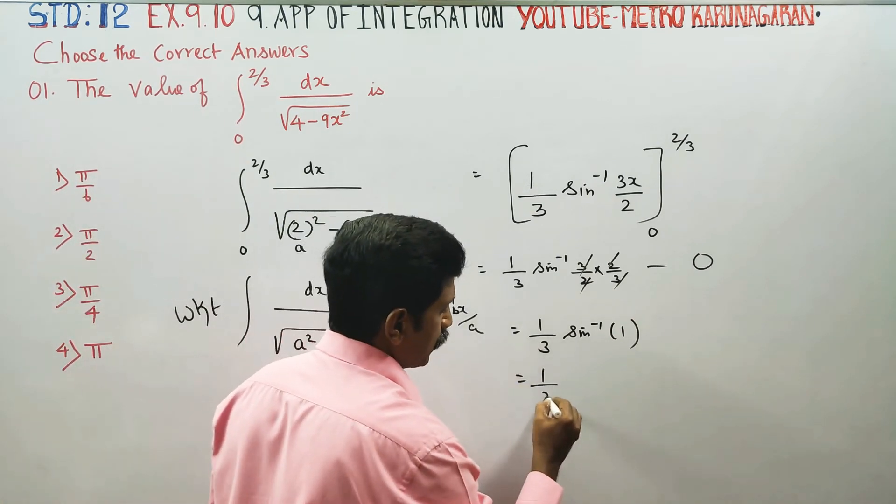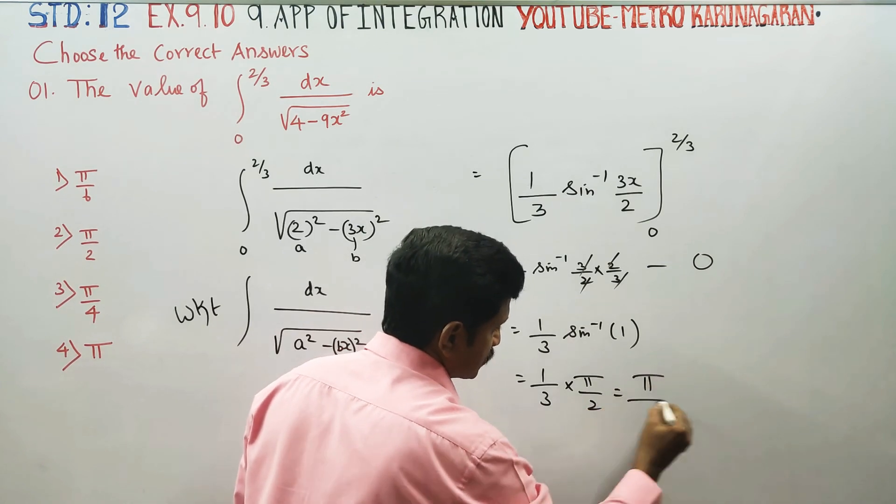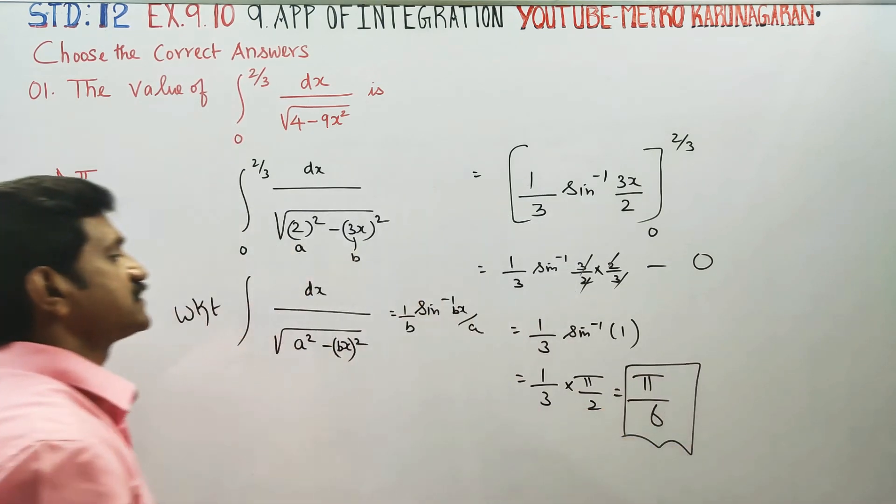90 degrees is π by 2. 1 by 3 into π by 2. π times 2 divided by 3 is 6. Therefore, your answer will be π by 6.